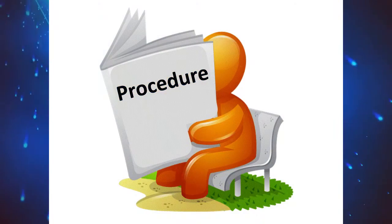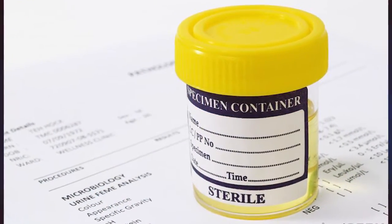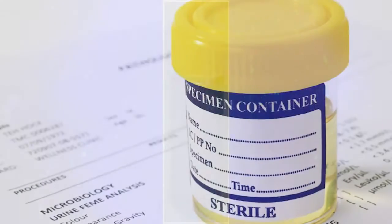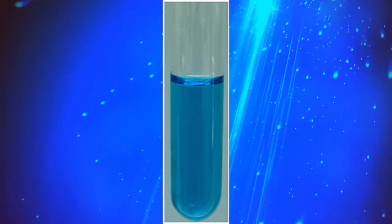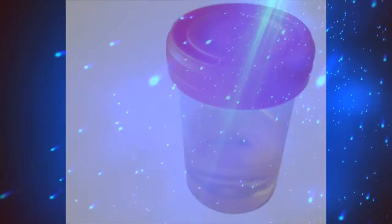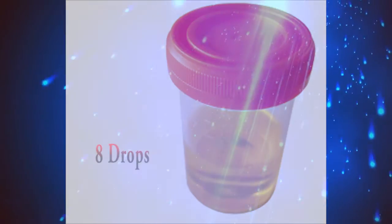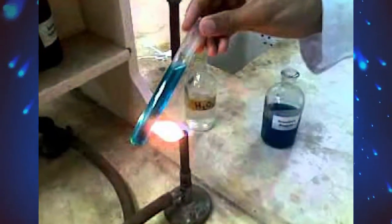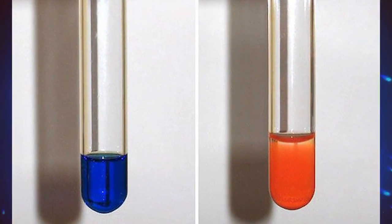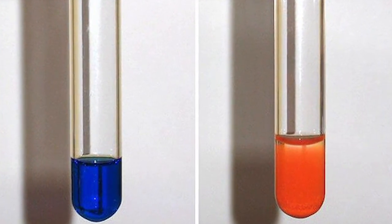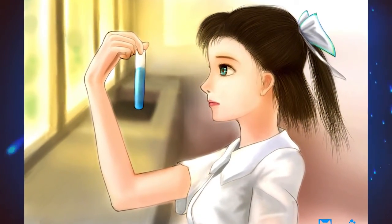Procedure: First, a urine sample is collected into a clean bottle. Then, take 5 ml of Benedict's solution into a test tube. Then, add 8 drops of urine into the tube. After that, mix and heat for 5 minutes. Then, remove from the heat and allow it to cool slowly. After, observe the color change.